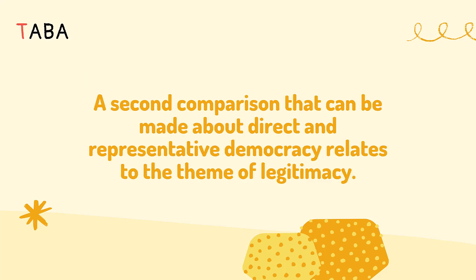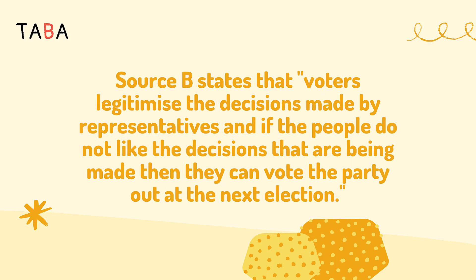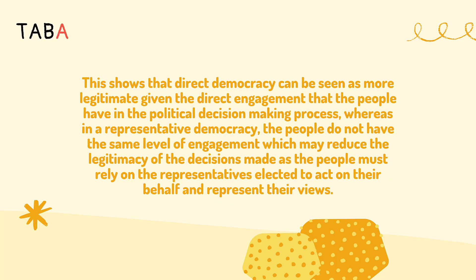A second comparison that can be made relates to the theme of legitimacy. Source A states that because all citizens can make political decisions by expressing their views, decisions are likely to be accepted as fair and people will accept the results without disputes. Source B states that voters legitimise the decisions made by representatives, and if they do not like the decisions being made, they can vote the party out at the next election. This shows that direct democracy can be seen as more legitimate given the direct engagement of the people in the political decision-making process, whereas in a representative democracy, the people must rely on elected representatives to act on their behalf, which may reduce legitimacy.